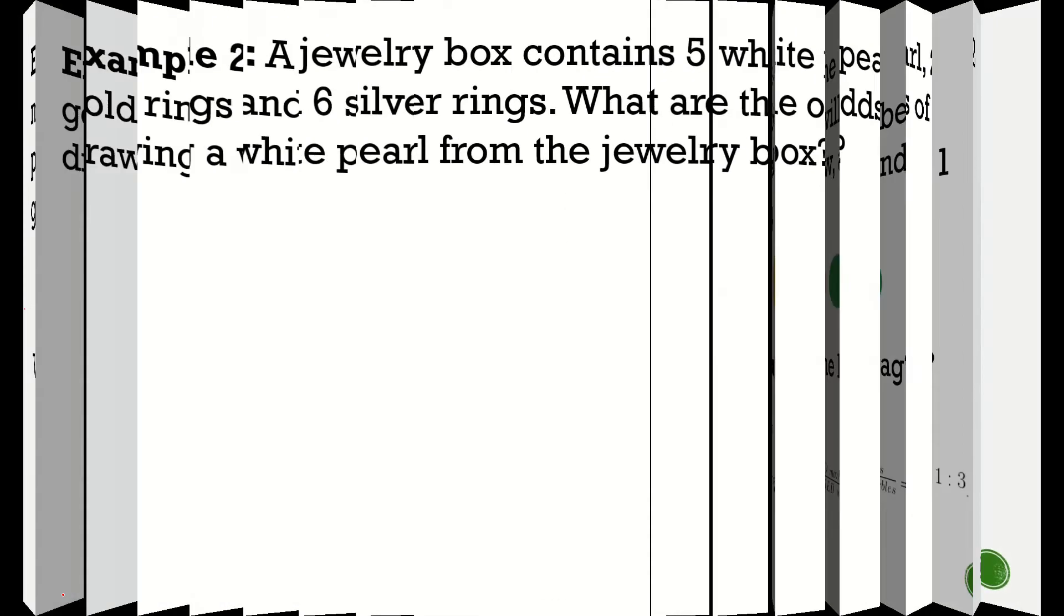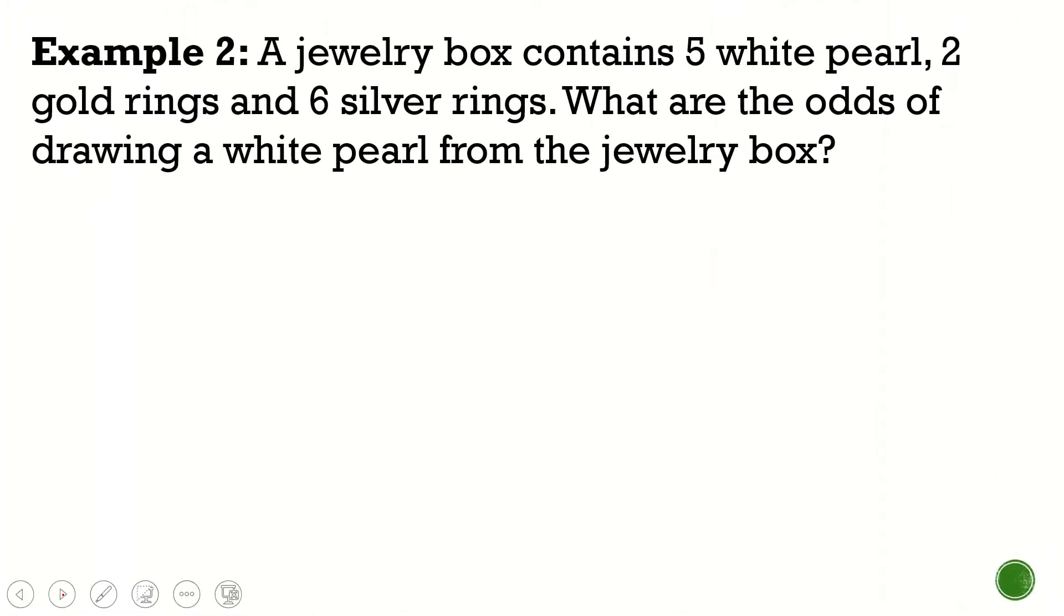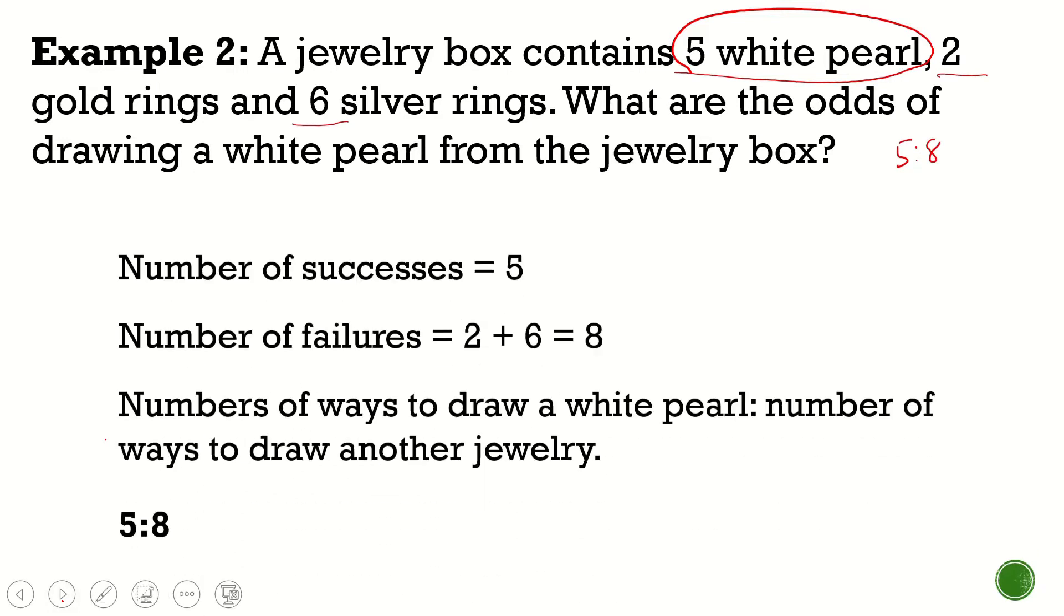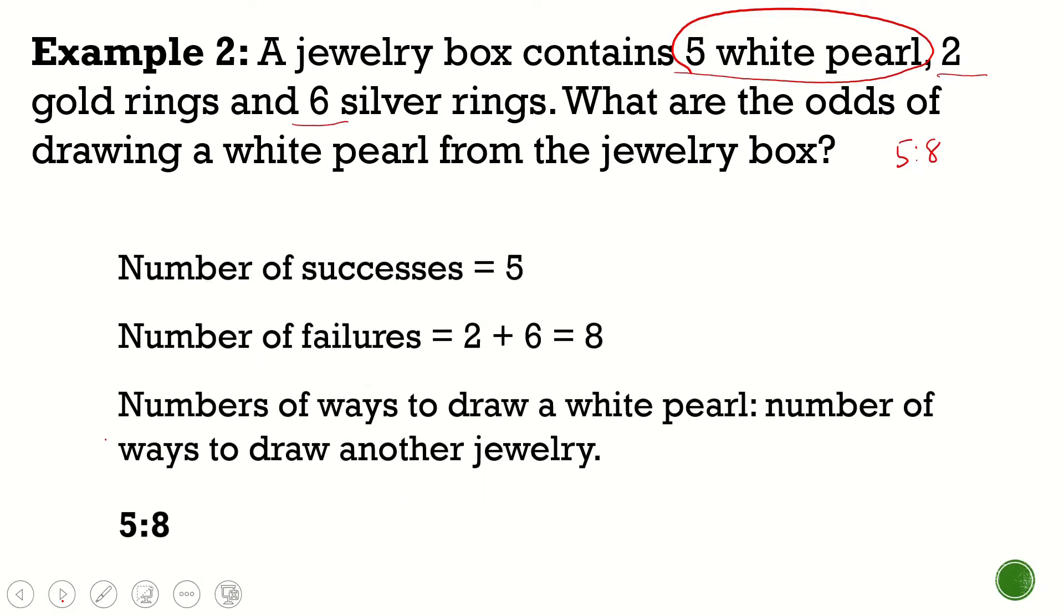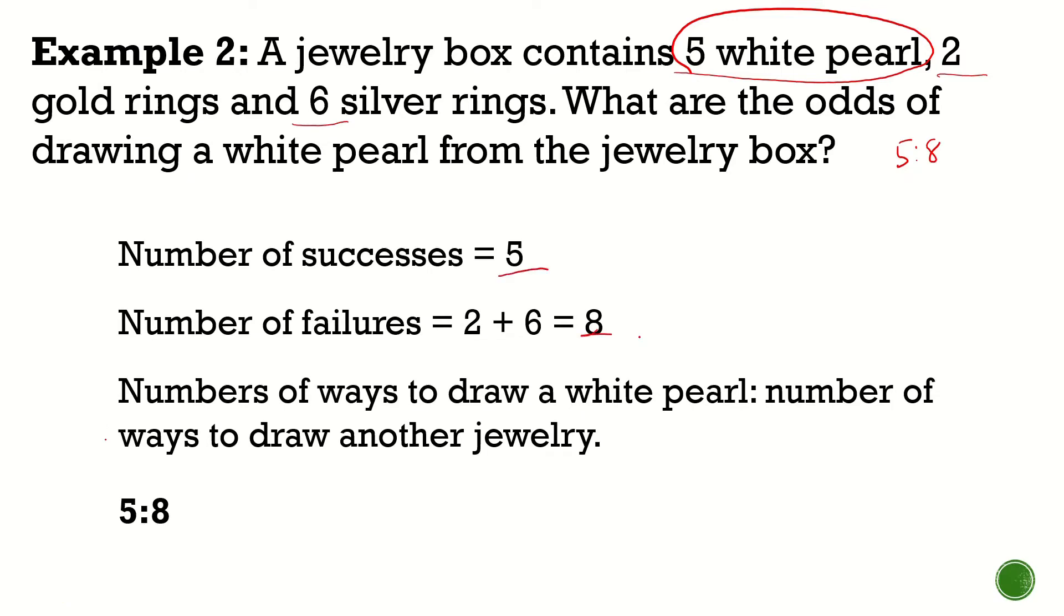Let's go to the next example. And here we have a jewelry box contains five white pearls, two gold rings, and six silver rings. What are the odds of drawing a white pearl from the jewelry box? We have five white pearls, and the number of pearls that are not white will be equal to 8. So that's 2 and 6. 2 plus 6 is equal to 8. So the answer here will be 5 is to 8. So this is the detailed explanation of that one. 5 is to 8.